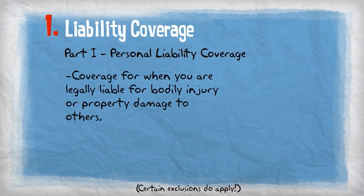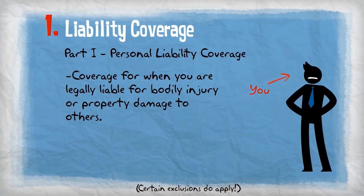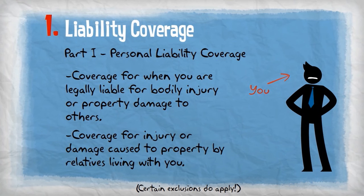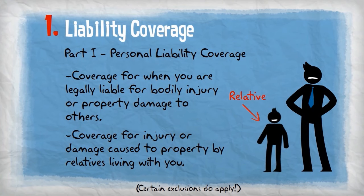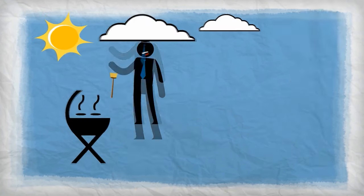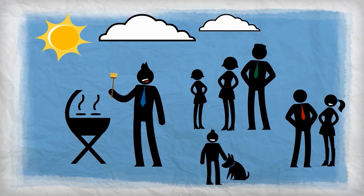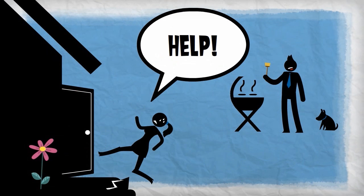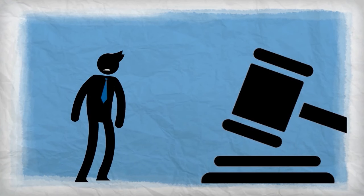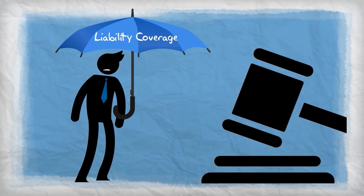Personal liability provides coverage when you are legally liable for bodily injury or property damage to others. It also covers injury or damages to others caused by any relative living with you. Let's say you're having a cookout and one of your guests is accidentally injured on your property — for example, they fall due to a broken step at your door. Your guest could decide to sue you for the injuries received because of your neglect. That's when your homeowner's policy's liability coverage would come into play to defend you against lawsuits and help pay for expenses associated with those lawsuits.